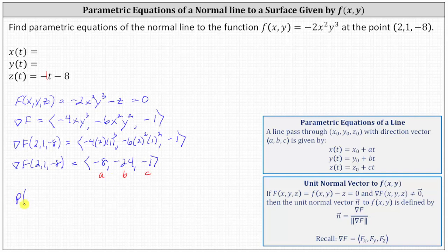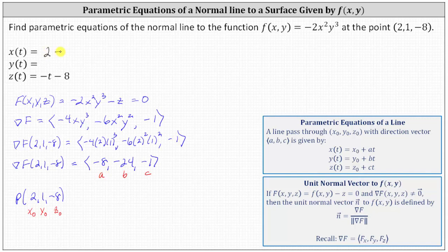The given point (2, 1, -8), which we call point P, indicates x₀ = 2, y₀ = 1, and z₀ = -8, which is why z(t) = -t - 8. So x(t) = x₀ + at = 2 - 8t, since a = -8.